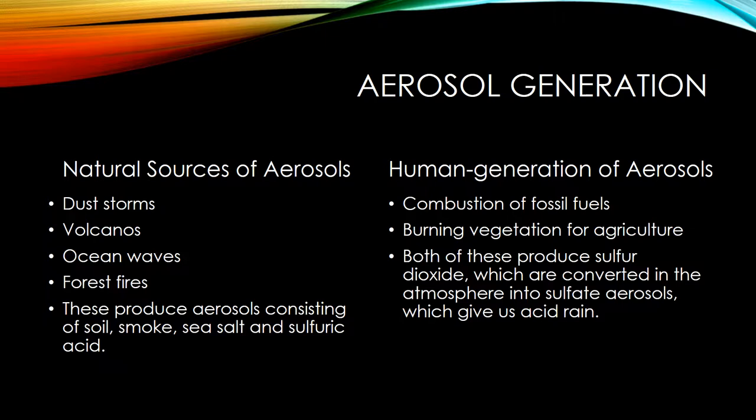Human generation of aerosols comes from the combustion of fossil fuels and burning vegetation for agriculture. Both of these produce sulfur dioxide, which is converted in the atmosphere into sulfate aerosols, which give us acid rain.